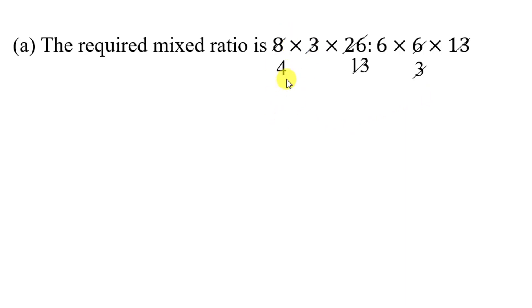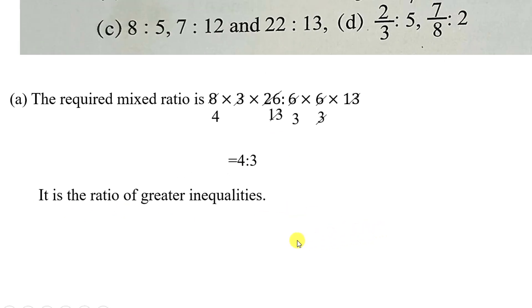After this, then 2, 4s are 8, 2, 3s are 6. So we get 4:3. Now when first antecedent is greater than rest, what is it. It is the ratio of greater inequalities. Greater inequalities, okay?